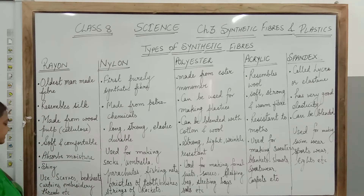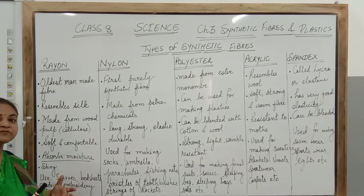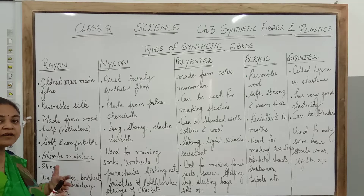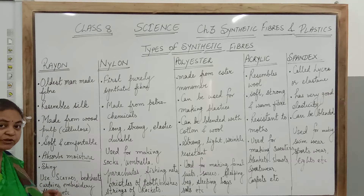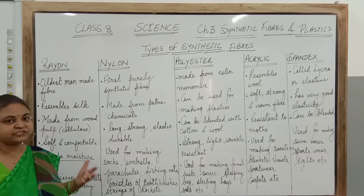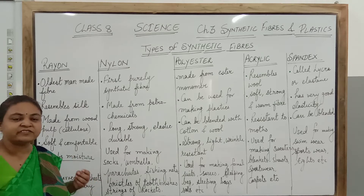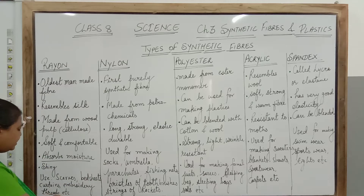The uses of rayon are for making scarves, bedsheets, curtains, covers of sofas and other upholstery. It is also used for embroidery threads because it can be dyed in different colors and it is shining. So the threads for embroidery are also made from rayon fiber.